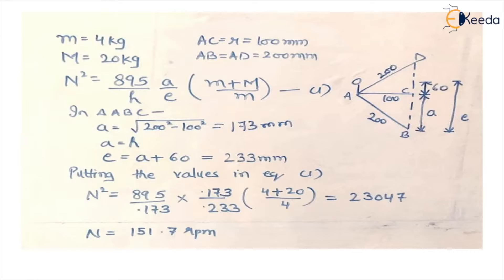It is always good to draw the diagram showing all the dimensions given in the question. We have made the length of the arms which is 200 mm, radius of rotation 100 mm, and we are also given the extension of the link which holds the ball. This is the ball which is of 4 kg and extension is 60 mm.